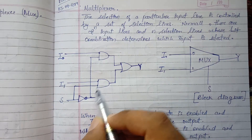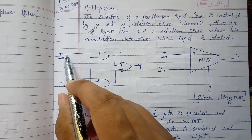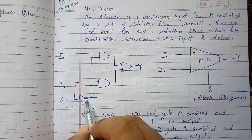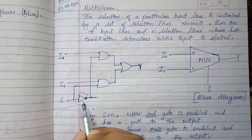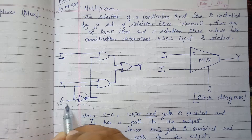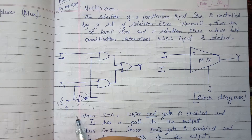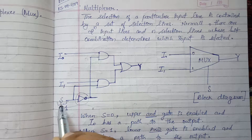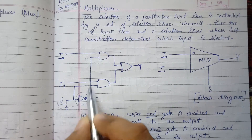This is already implemented in the circuit. This AND gate takes two inputs: I0 and the selection input. For I0's AND gate, the selection input is inverted — we take the complement of the select line. So when the select line input is 1, it becomes 0 at that AND gate, and when the selection line is 0, it becomes 1.